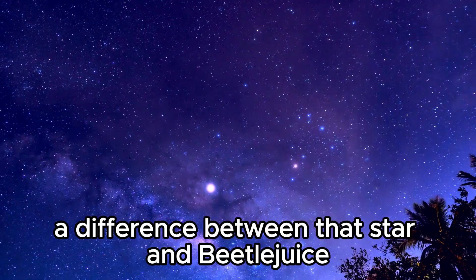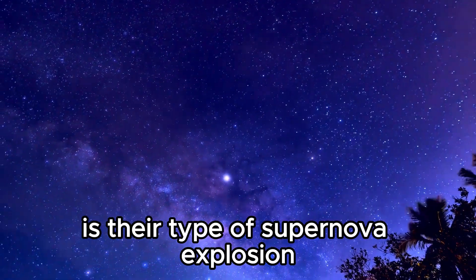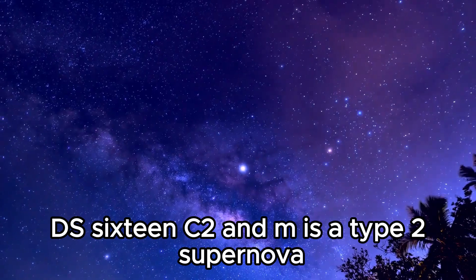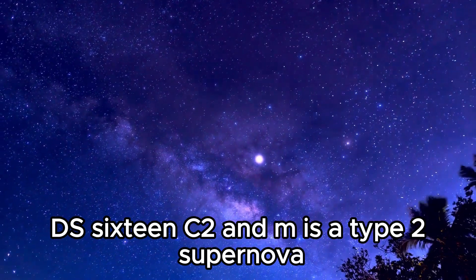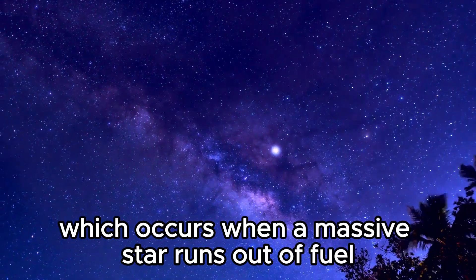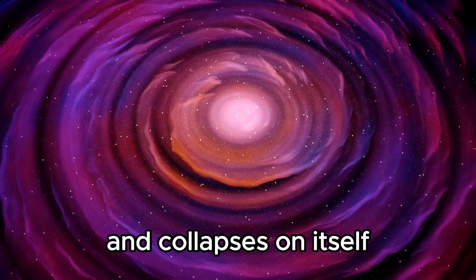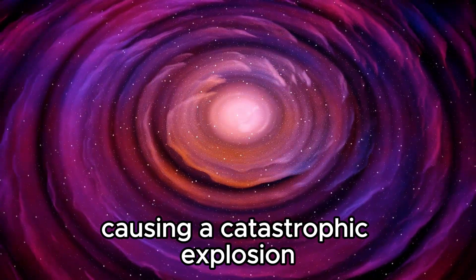A difference between that star and Betelgeuse is their type of supernova explosion. DS16C2NM is a type 2 supernova, which occurs when a massive star runs out of fuel and collapses on itself, causing a catastrophic explosion.